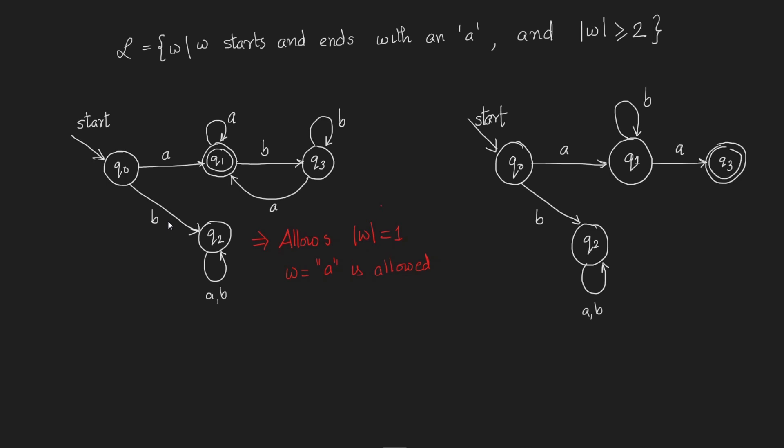In q3, the string can be accepted. However, if a B is then observed, the string is still not complete, cannot be accepted, and we have to move to q1. On an A, however, we can still stay in q3 and continue receiving A's without violating any of the constraints.